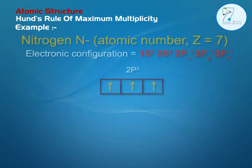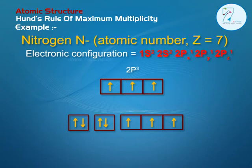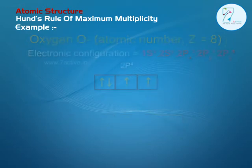Nitrogen N, atomic number Z equals 7. Electronic configuration equals 1s2, 2s2, 2px1, 2py1, 2pz1. The seventh electron enters in the 2pz orbital.